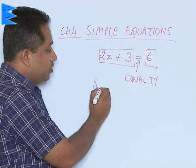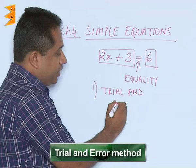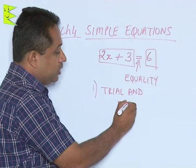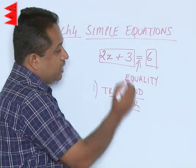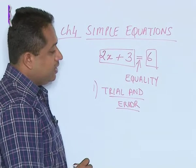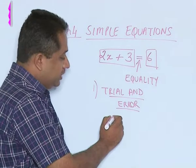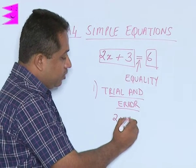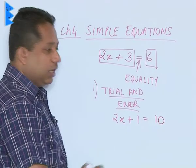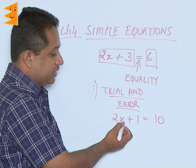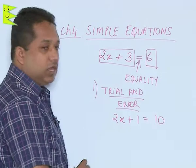The first method that we are going to do is the trial and error method. In the trial and error method you have to substitute different values where we will substitute the LHS and RHS and see whether it is coming equal or not. Let us say for example we have 2x plus 1 is equal to 10. Now what are the values of x that we can put such that it is going to come equal to 10?